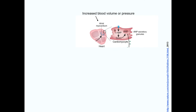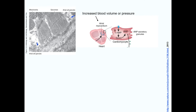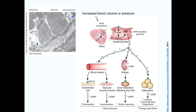Here we see the atrial myocardium with myocytes that will secrete ANP granules in response to high blood pressure or volume, shown again in this electron micrograph. These granules travel through the blood to various target organs: to blood vessels, where they act on endothelial cells to increase permeability, and on vascular smooth muscle to cause vasorelaxation. ANP also acts on the kidney duct epithelial cells, which increases sodium excretion. What you really need to know is that the end result is to lower blood pressure. We'll talk more about ANP when we get to the kidney.